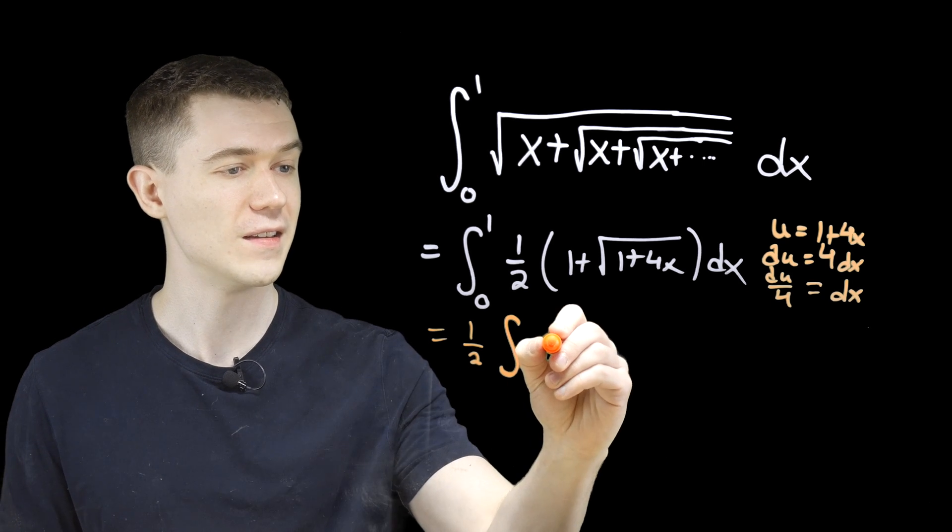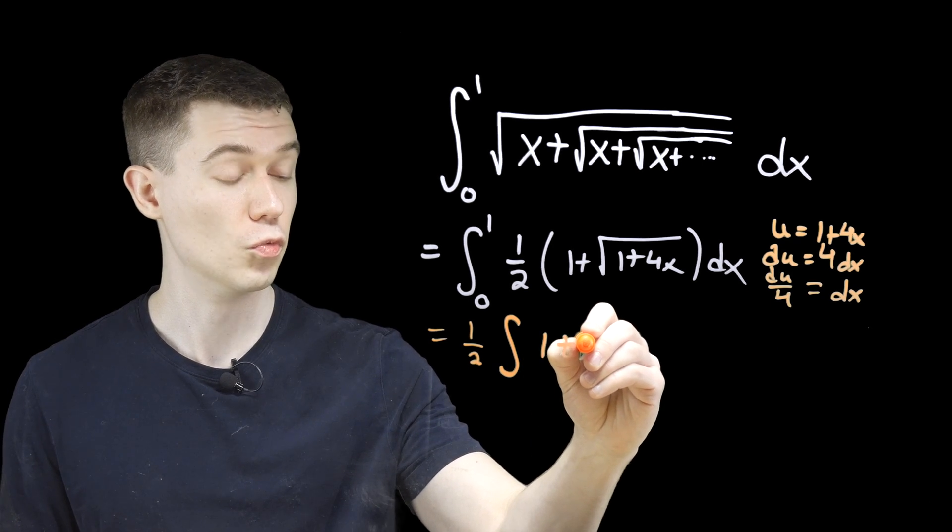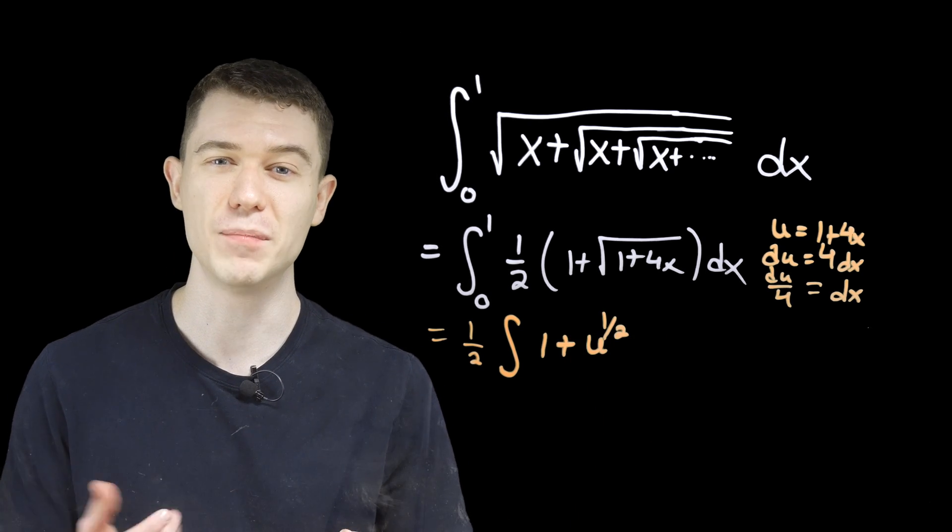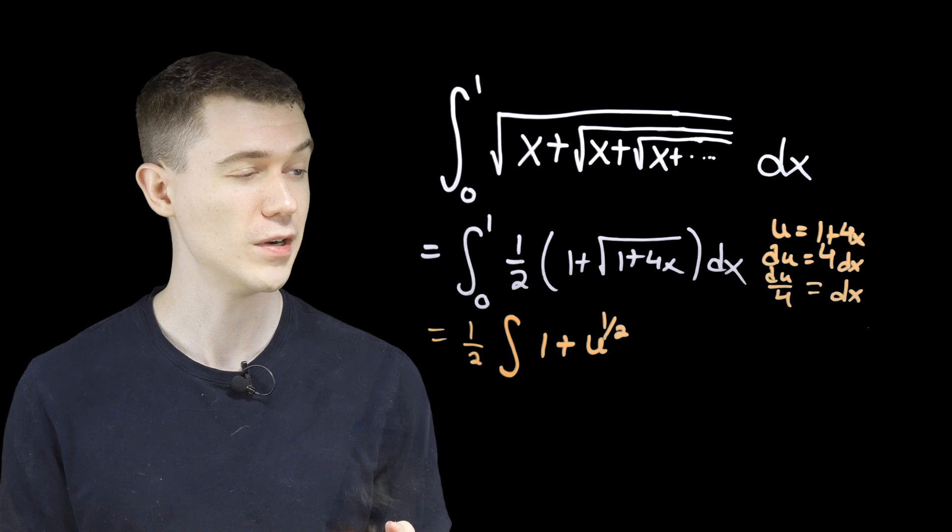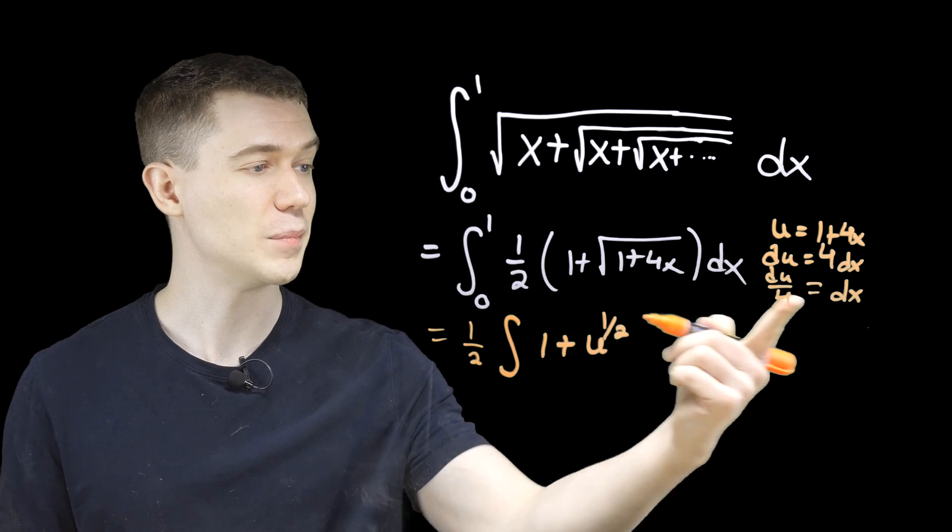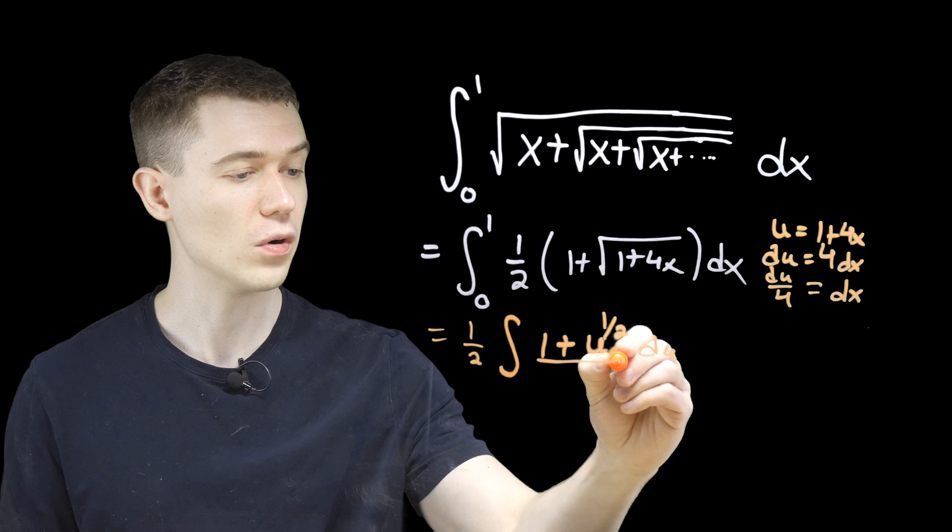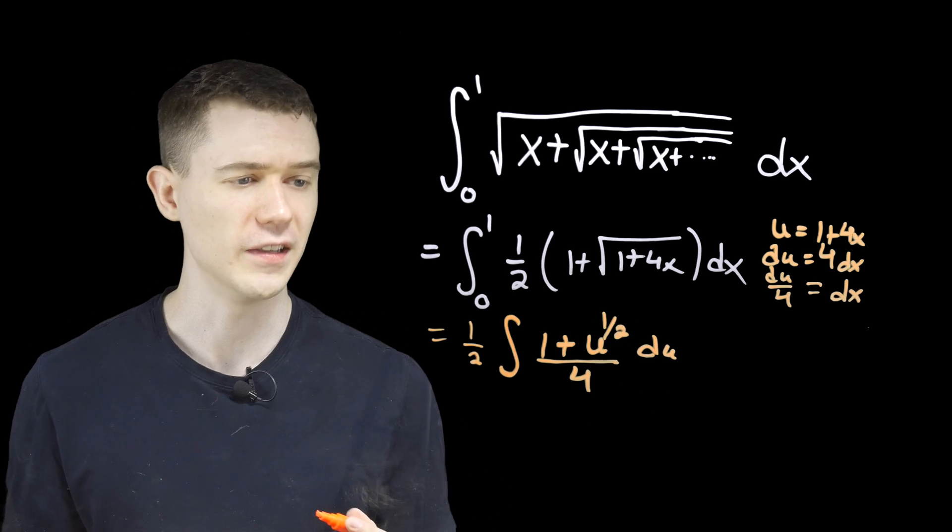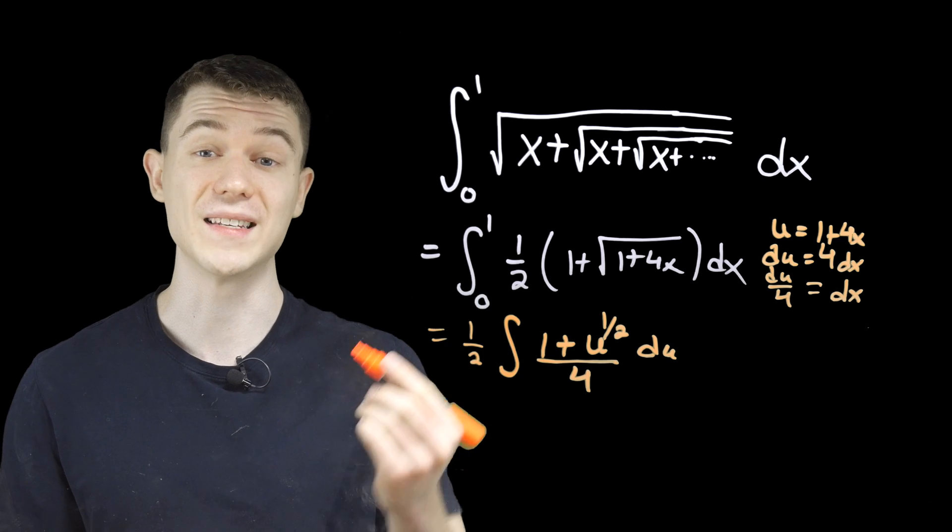So I think this will be one plus root u, or I'll just write it as u to the one half power. That's typically how we think of this when we do anti-derivatives. The dx becomes a du over four. I'll write it like this. And maybe I'll go ahead and just change the limits of integration.